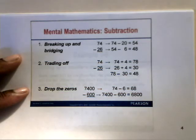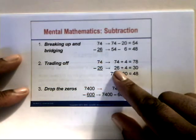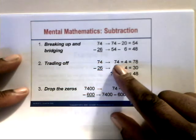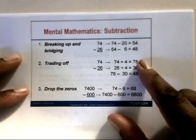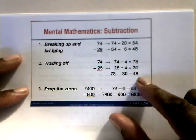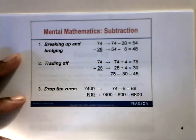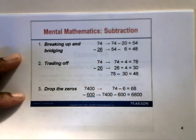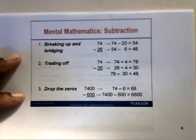The second subtraction method is trading off. To make 26 a multiple of 10, add 4, getting 30. We also add 4 to 74, giving 78. Now 78 minus 30 equals 48. The third method is dropping off zeros, like 7,400 minus 600. Drop the zeros and do 74 minus 6, which gives 68, then add the two zeros back for a final answer of 6,800.